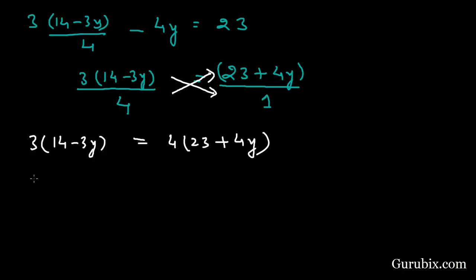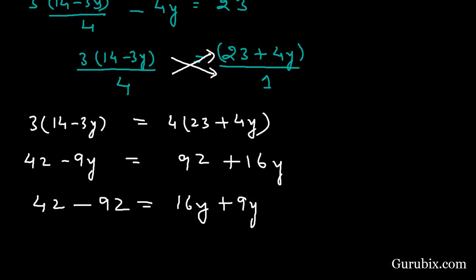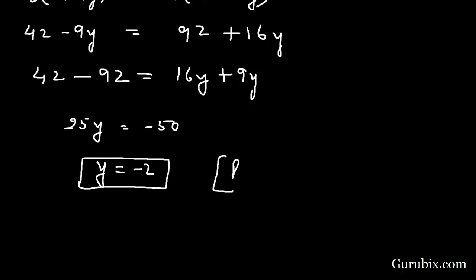Expanding: 42 - 9y = 92 + 16y. Taking -9y to the right-hand side gives 16y + 9y, and taking 92 to the left-hand side gives 42 - 92. Finally, 25y = -50, which means y = -2.